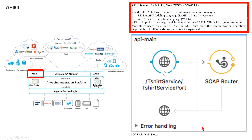The SOAP API main flow: the main flow for a WSDL-based API manages the first two tasks. The logic in the main flow accepts requests, sends responses, and facilitates communication between interfaces and the API process. The main flow typically consists of an HTTP listener and SOAP router components. You can see the /t-shirt-service/t-shirt-service-port connected to the SOAP router, and error handling.